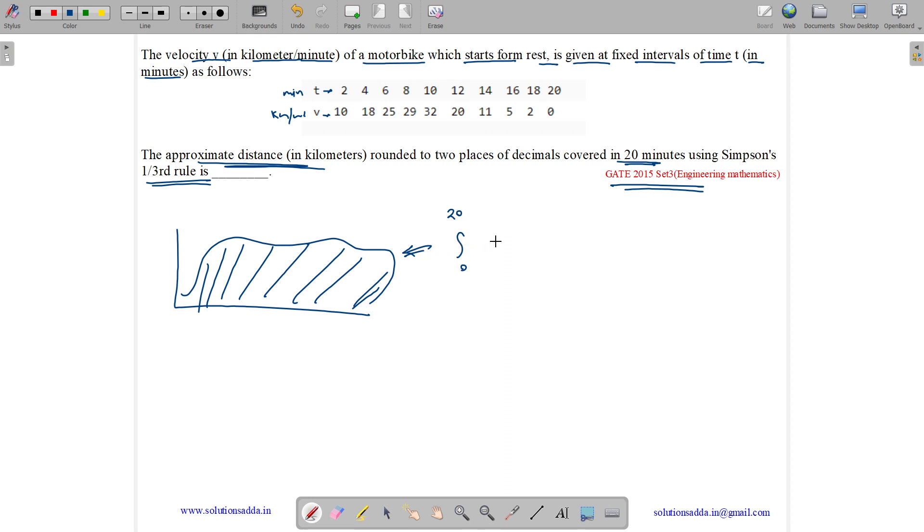In this question, the exact speed function is not given. We are just given the speed at different instances of time. Now the question is asking what is the total distance we can cover in 20 minutes. So according to the question, it is given that the motorbike starts from rest.